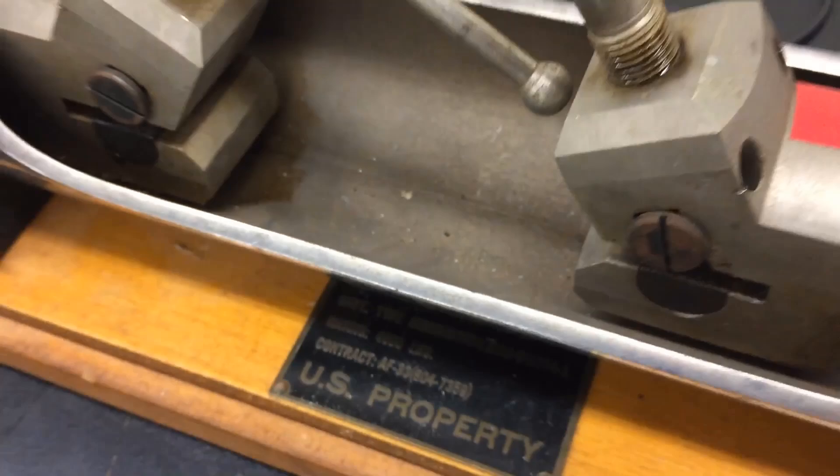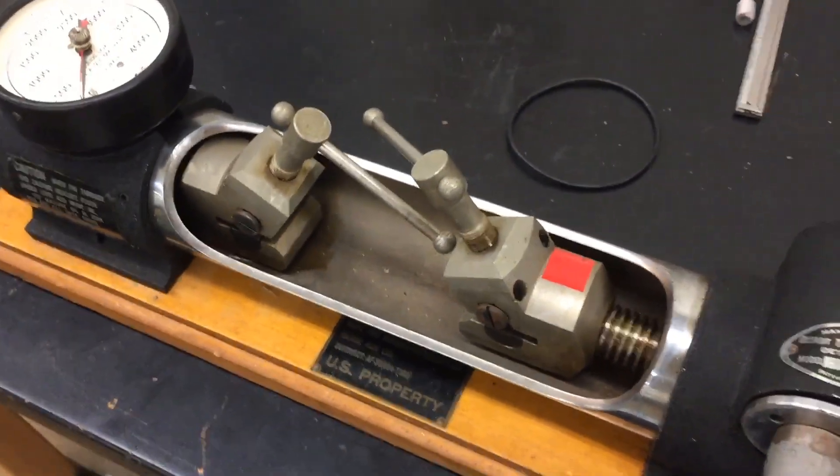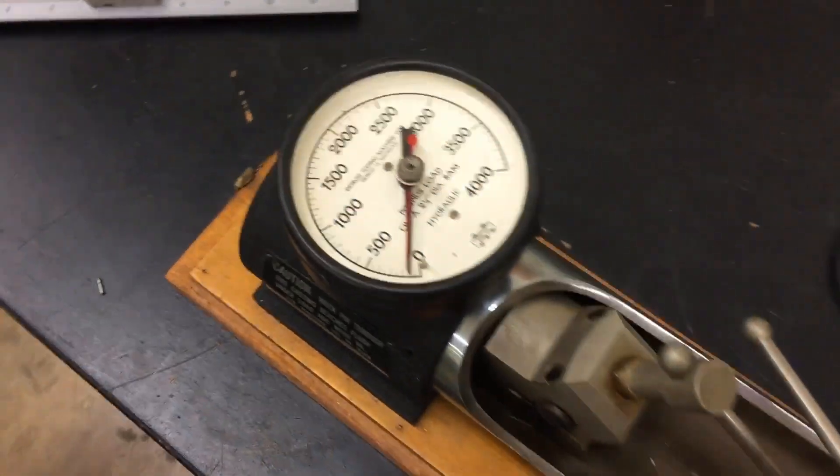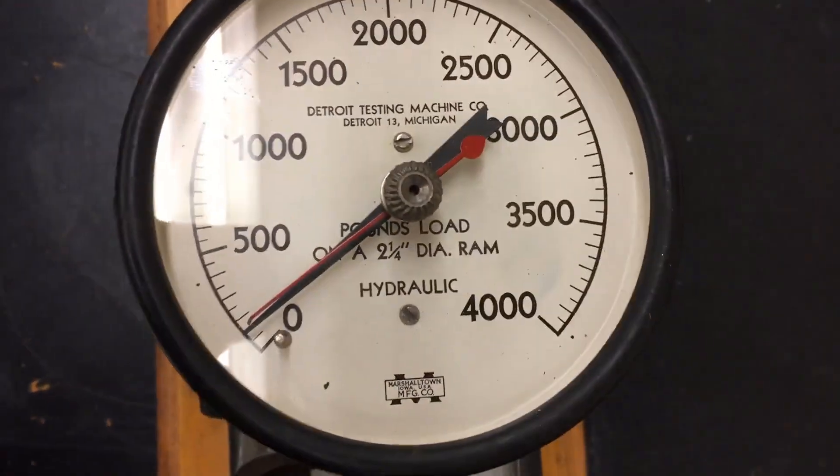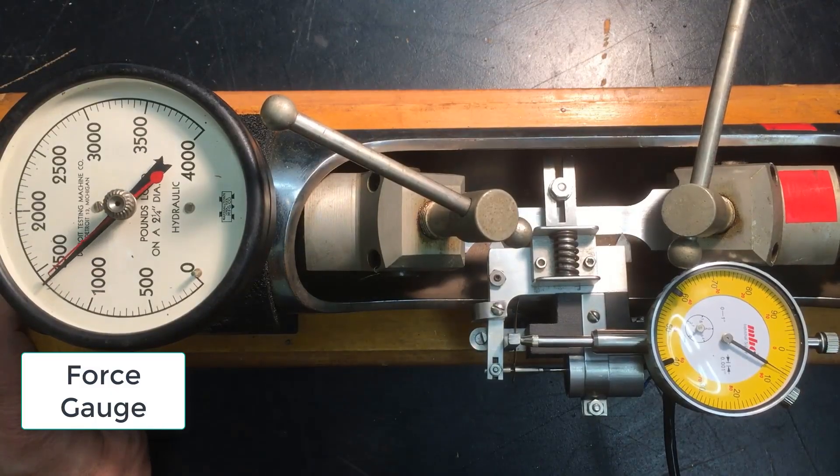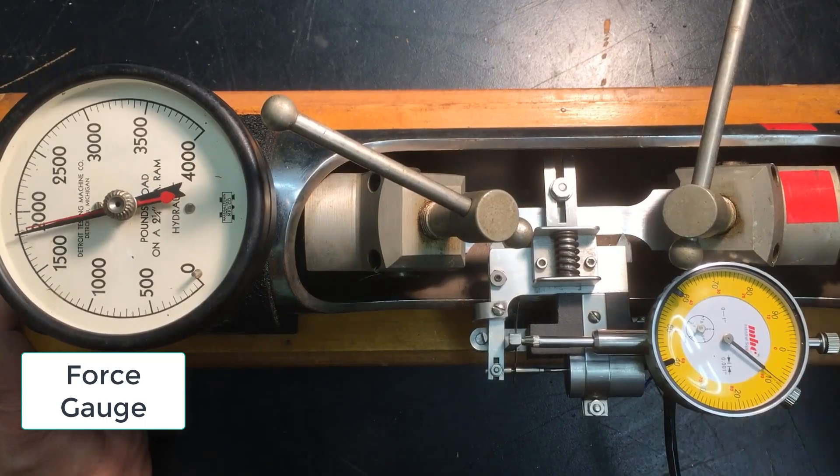Next we need a machine that is strong enough to pull the tensile test specimen apart. We'll use this old government surplus tester today. As this machine pulls the specimen it tells us how much force it's pulling with.